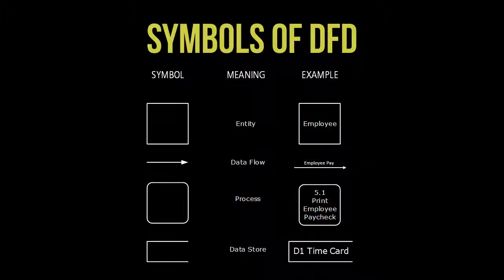The data flow represents the movement of a single piece of data from point to point through the system — for example, from process to process, entity to process, or process to data store.